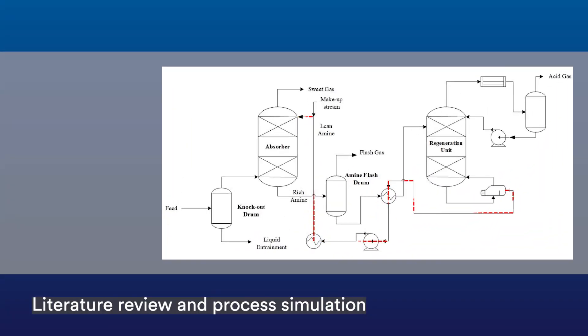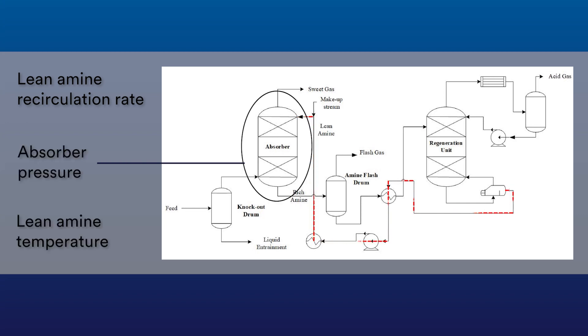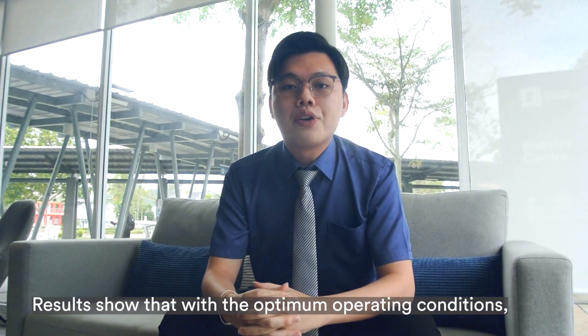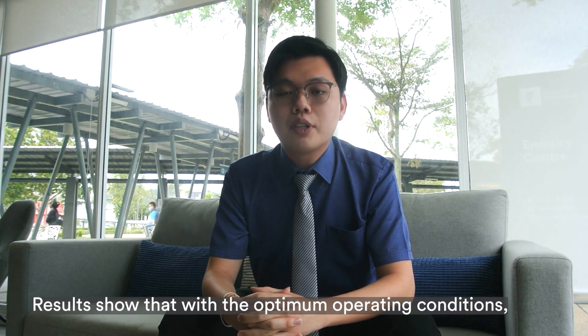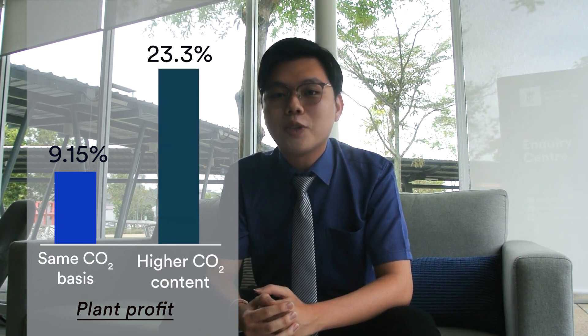Literature review and process simulation have illustrated that lean amine circulation rate, absorber pressure, and lean amine temperature will affect operating costs and the CO2 removal in sweet gas. Results show that with the optimal operating condition, the profit of the plant is predicted to increase by 9.15% for the same CO2 basis, and by 23.3% for higher CO2 content.